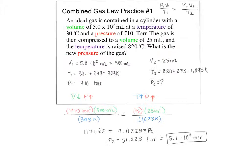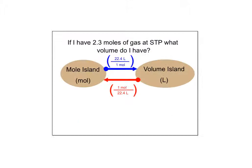For the Combined Gas Law problem, we're solving for pressure two. The volume is getting smaller, which increases pressure; the temperature is getting much hotter, which also increases pressure. Both effects push pressure upward, so the final pressure is much larger than the starting 710 — which matches the large answer we calculate.